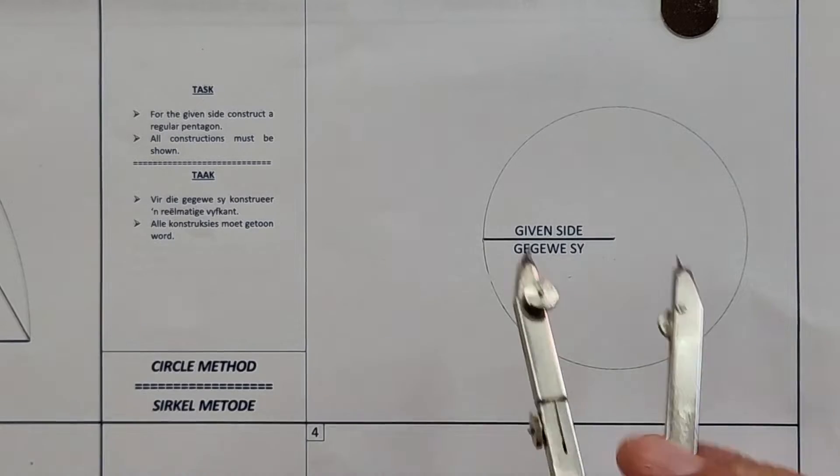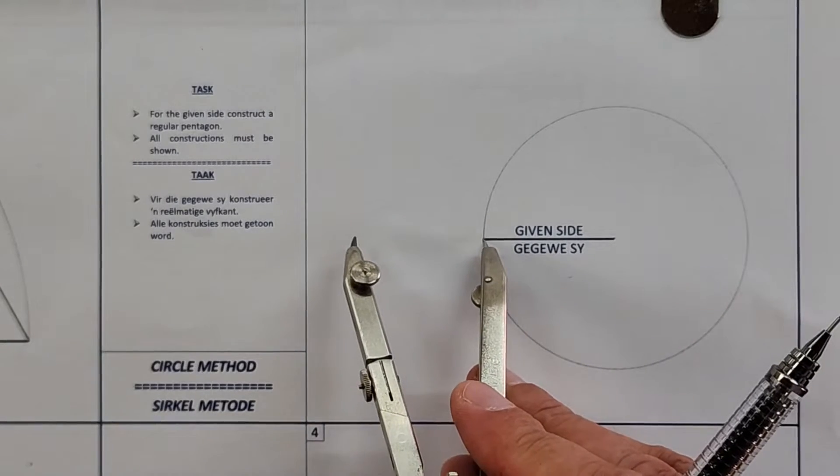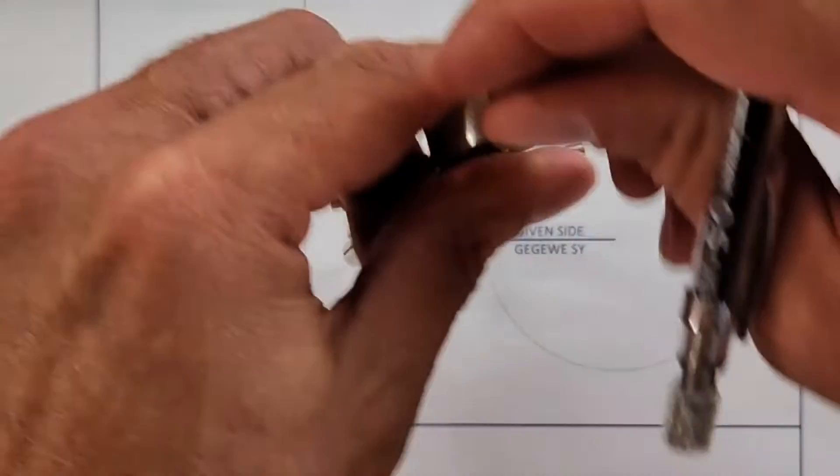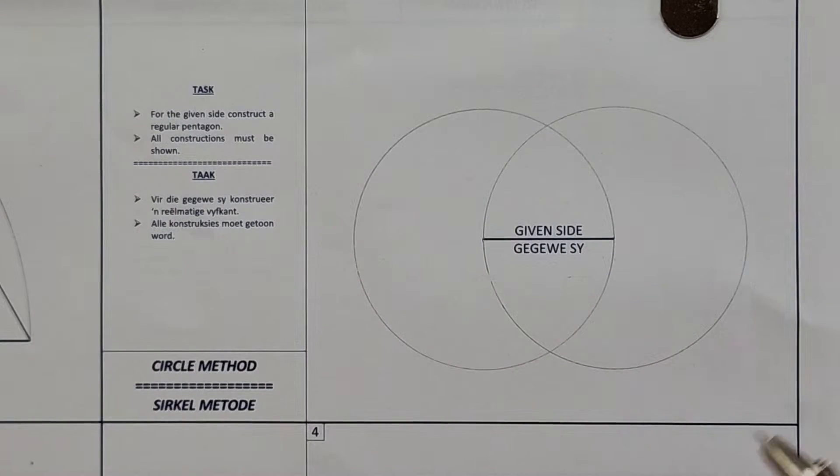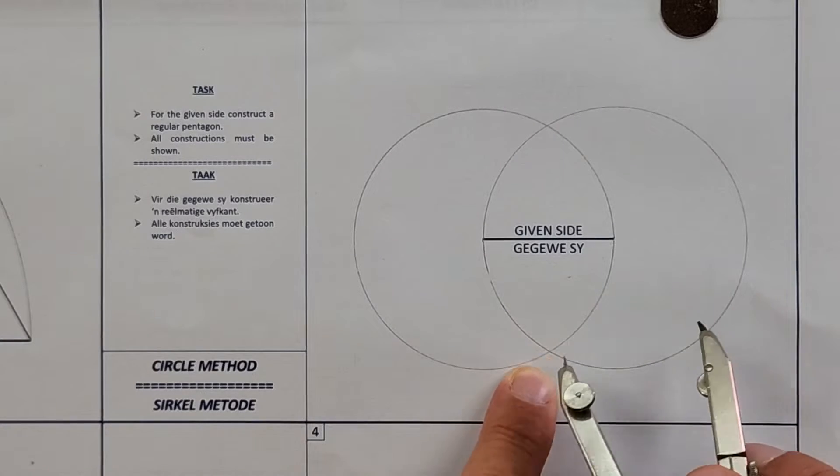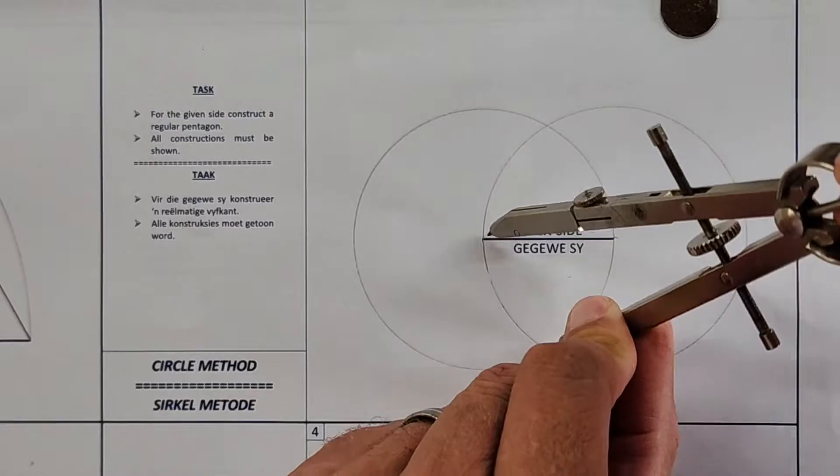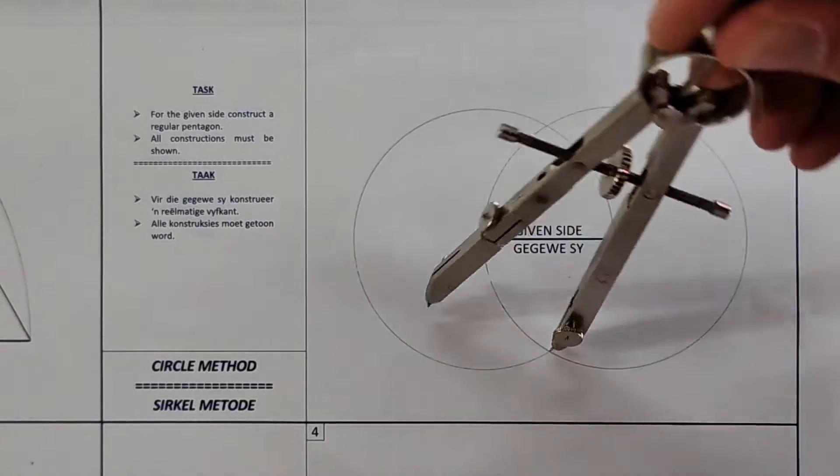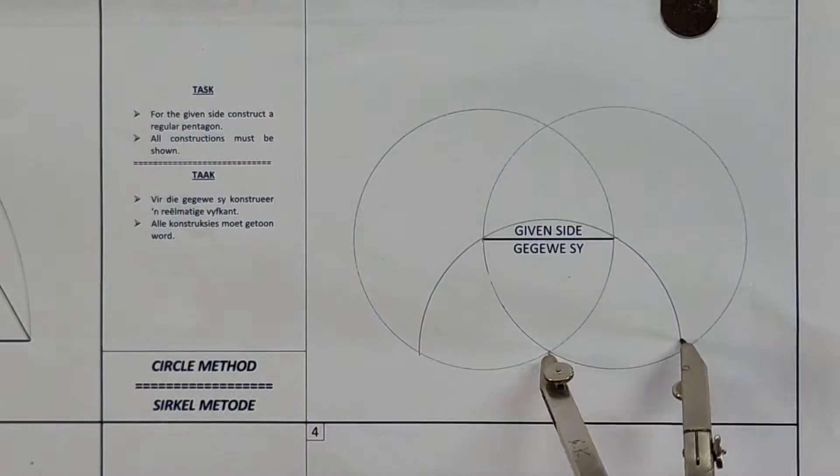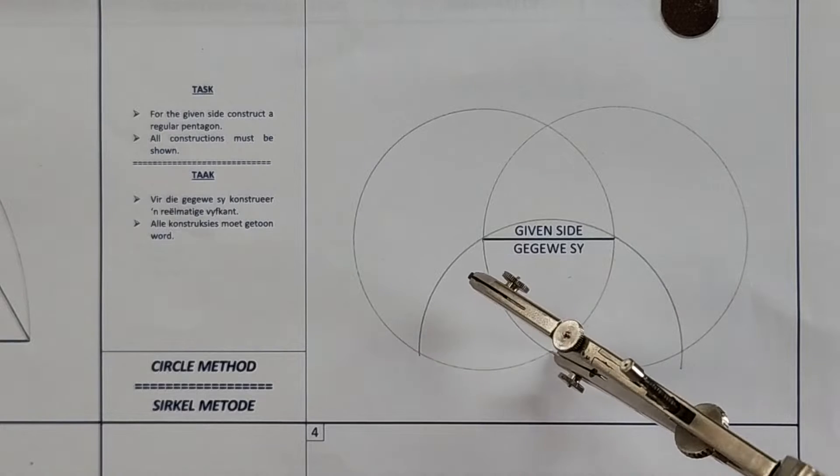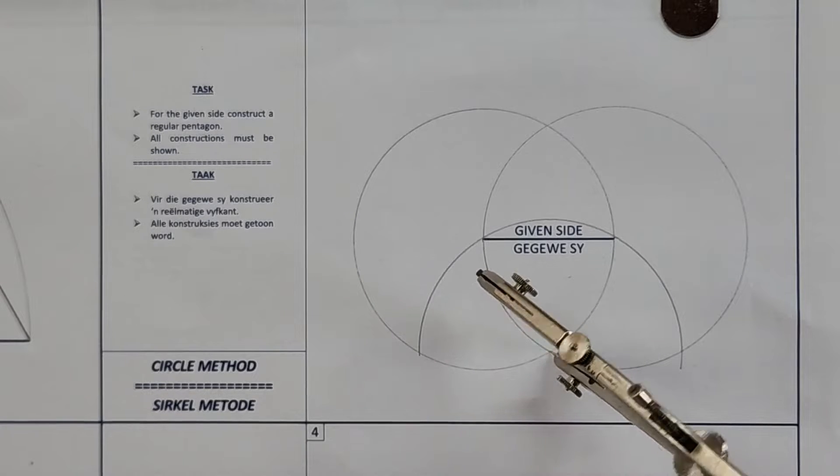Alright, first step, using that same radius, set it on the other side, full circle again. Happy? Alright, then if you place your compass on this point here, you'll draw an arc that goes through both of those corners. So we'll do that. Alright, so we've just used the same radius, and we've drawn three different circles already.